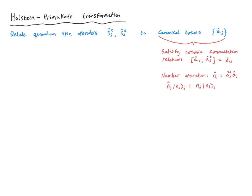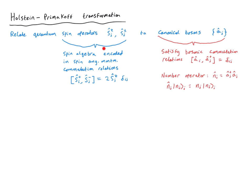How can we use bosonic operators to describe spin systems? Our quantum mechanical spin operators satisfy spin angular momentum commutation relations. However, there's a big difference: for spin operators, the commutator of S_plus and S_minus yields another spin operator, while for canonical bosons the commutator yields simply a number. This makes spin operators much more difficult to work with. We'll see it's easier to represent our spin operators in terms of bosonic operators and work with those instead — this is done through the Holstein-Primakoff representation.